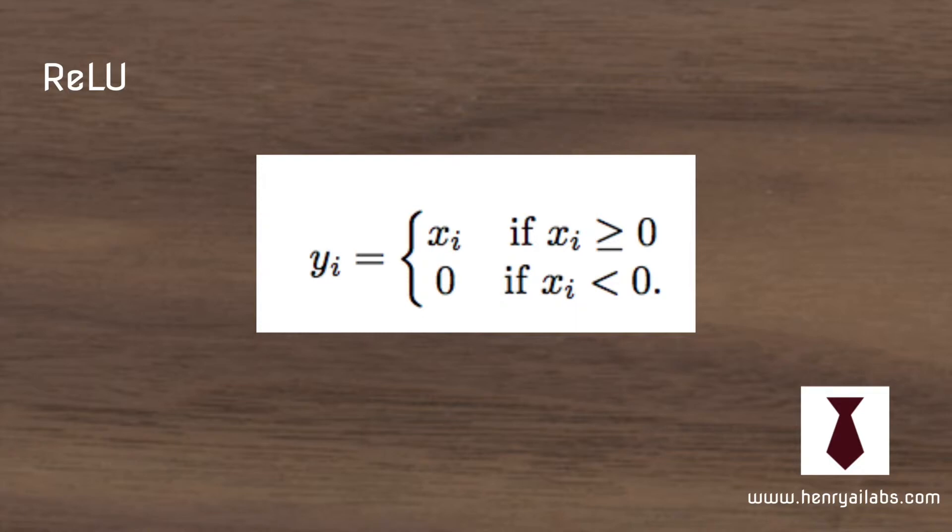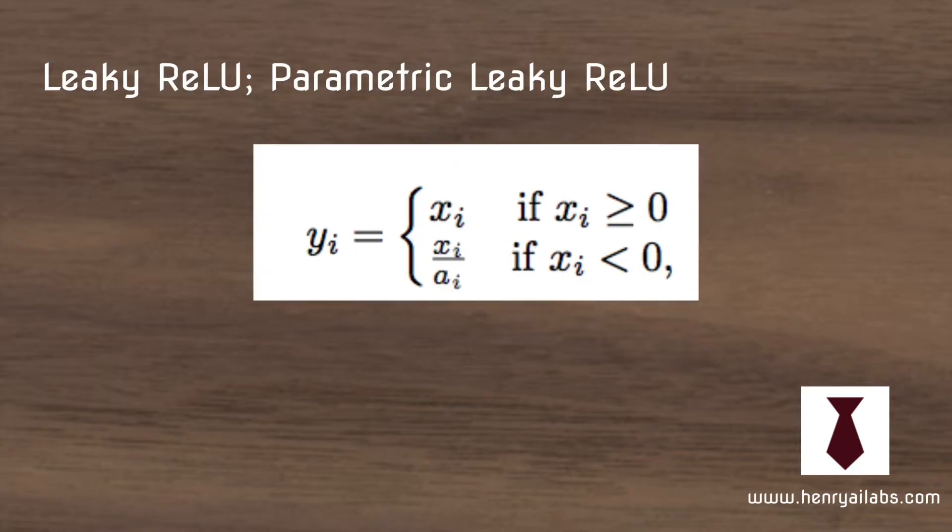The ReLU function takes the maximum of the input and 0. The leaky ReLU takes the maximum of the input or, instead of setting it to 0, sets it with the slope parameter alpha. This alpha parameter can be learned during training or preset.